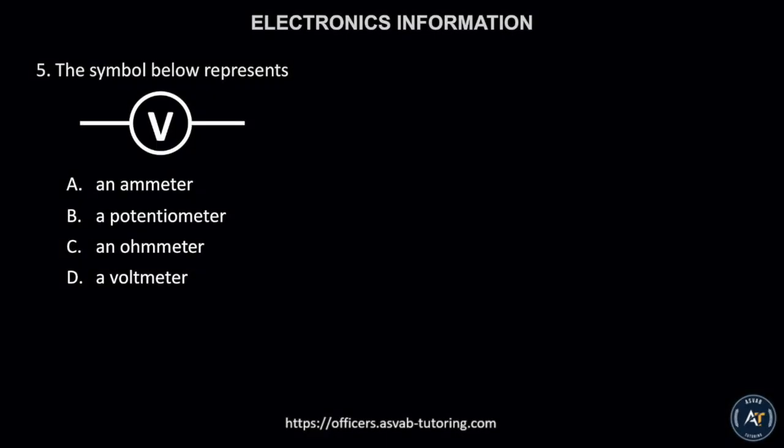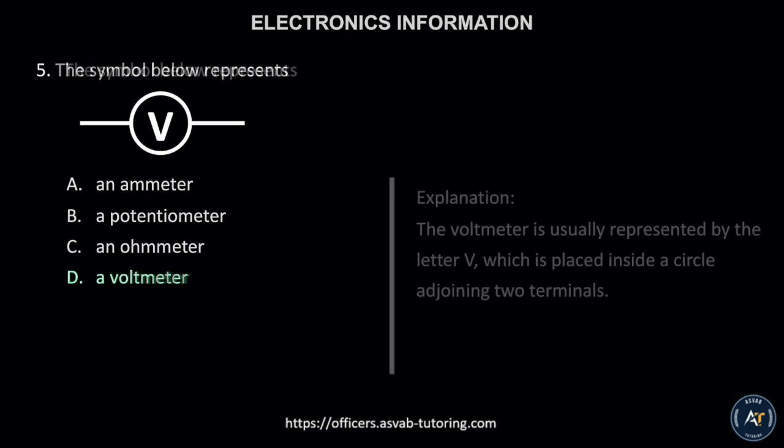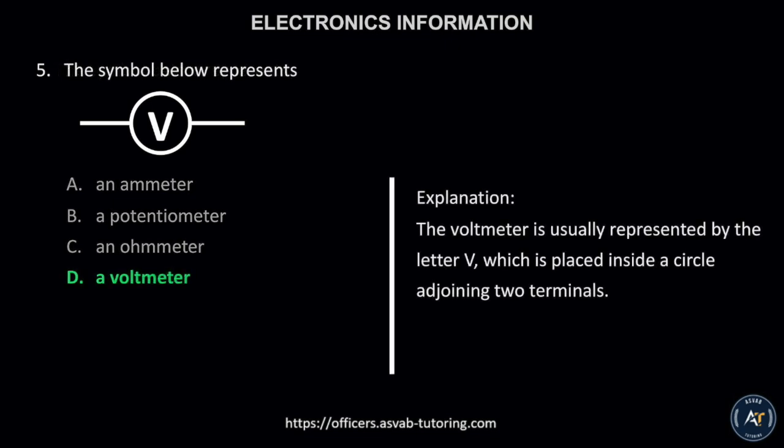Number 5. The symbol below represents: A. An ammeter, B. A potentiometer, C. An ohmmeter, or D. A voltmeter. The correct answer is letter D, a voltmeter. The voltmeter is usually represented by the letter V, which is placed inside a circle adjoining two terminals.